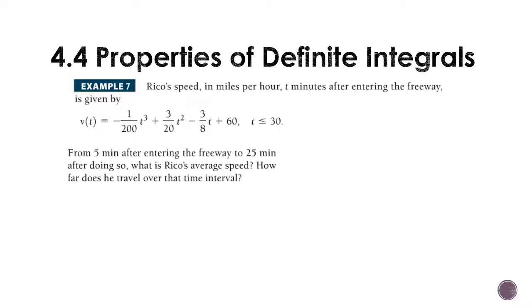Frisco's speed in miles per hour, two minutes after entering the freeway, is given by this function. From five minutes after entering the freeway to 25 minutes, what is its average speed? So, from five to 25, how far does he travel in that time interval? Pause the recording, give it a try, and resume to check your answer.